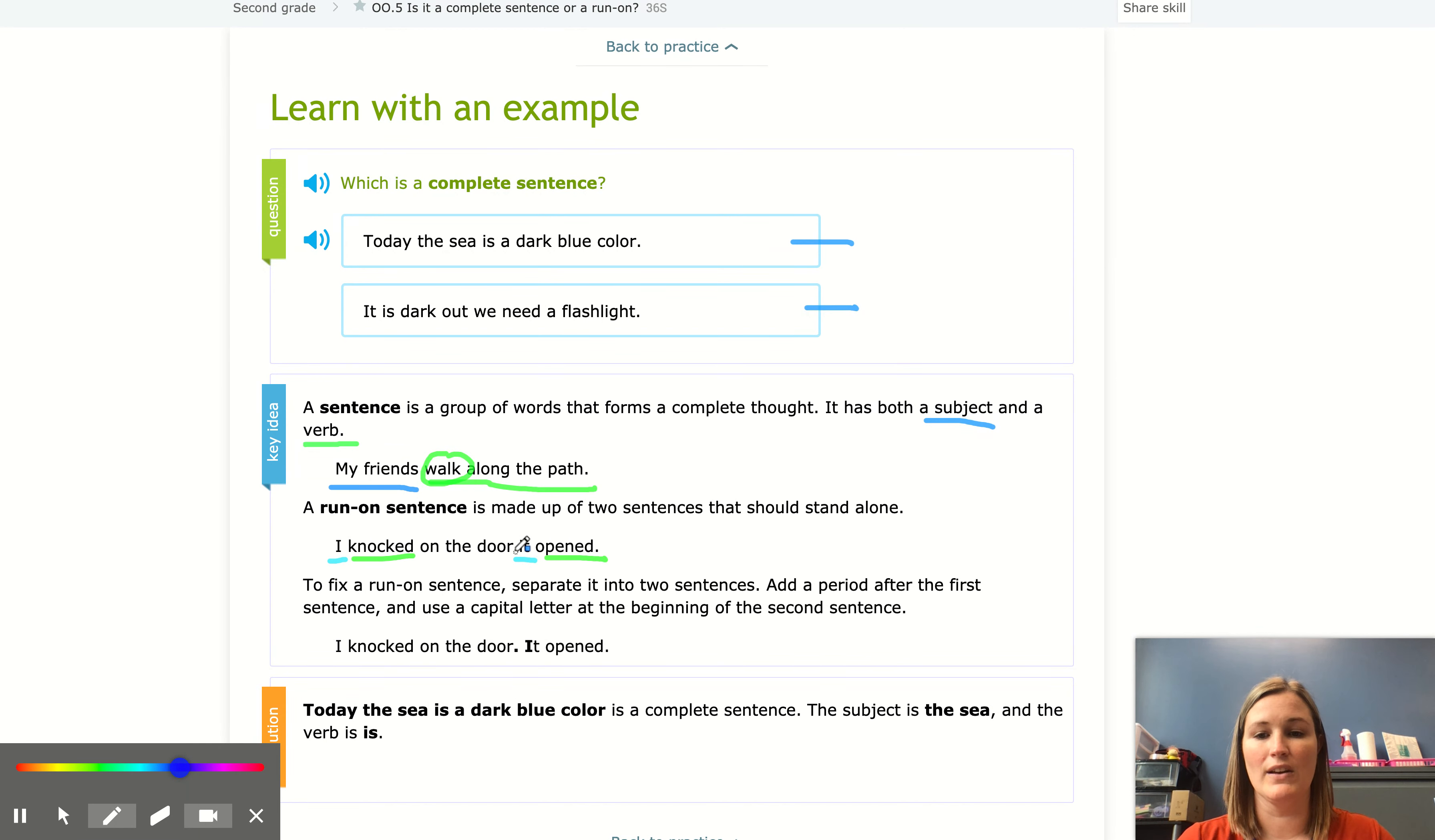Really we should have a period here and it's going to talk about how to fix those. To fix a run-on sentence we have to separate the two sentences so they're not jammed together. You can add a period after the first sentence and use a capital letter at the beginning of the second sentence. So here I have I knocked on the door and it opened. They added in a period and a capital letter to make it two separate sentences.